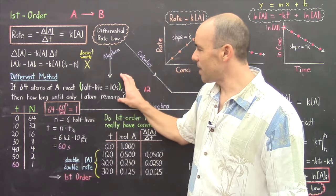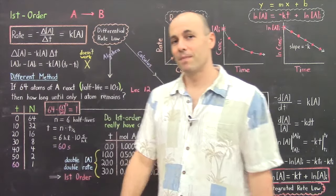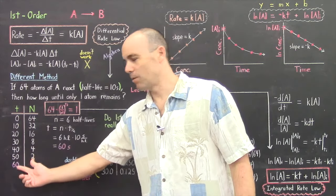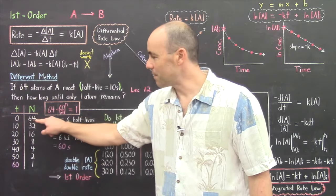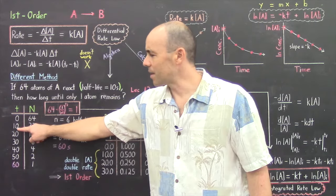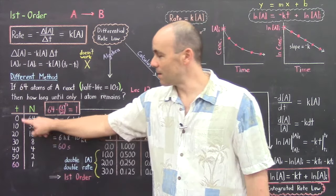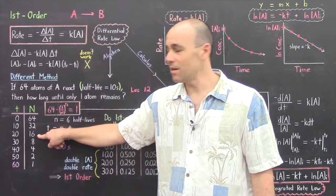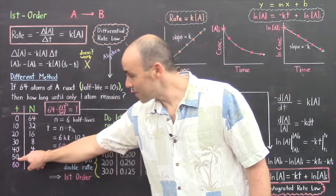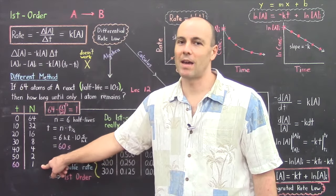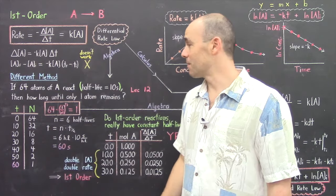The solution to this problem will actually provide us with the integrated rate law. In order to solve this problem, you might construct a table: at 0 seconds you have all 64 atoms; after 10 seconds, half reacts and you're left with 32 atoms of A; another 10 seconds, 16; another 10, 8; another 10, 4; another 10, 2; and finally after 60 seconds you have one atom remain. So the answer is that it takes 60 seconds for one atom to remain.